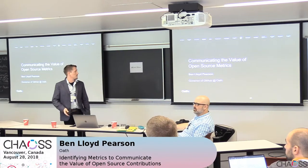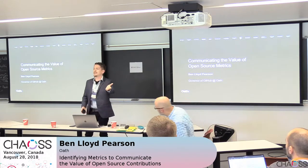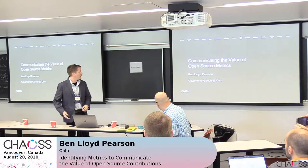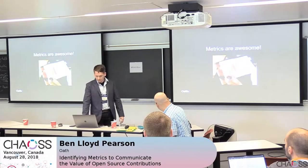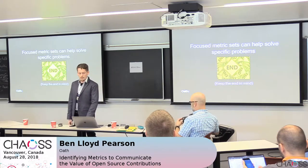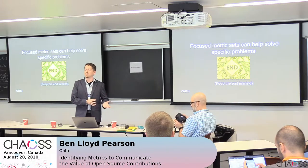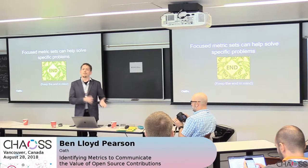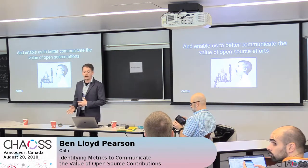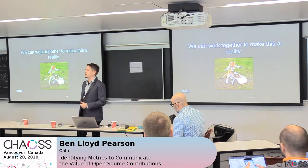My topic is communicating the value of source metrics. Matt actually set me up with his keynote perfectly for this — I'm hoping I'll solve all the problems he presented. Metrics are awesome; however, they are not inherently valuable. We need to find focused metric sets that help us solve specific problems. It's the idea of keeping the end in mind: what's the problem, and what are the metrics you need to actually solve it? This will enable us to better communicate the value of our open source software development efforts.